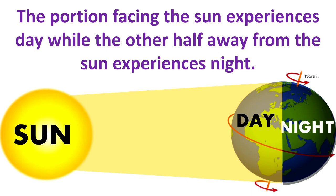This is the reason why it is nighttime in America when it is daytime in India. Now, what would happen if the earth did not rotate? The portion of the earth facing the sun would always experience day, bringing continuous warmth to that region, and the other half would remain in darkness and be freezing cold all the time.